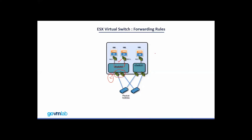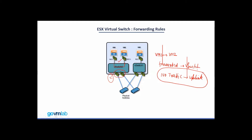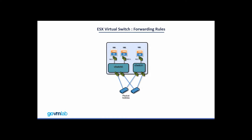To confirm: VM1 to VM2 traffic is forwarded by the virtual switch, and there is no traffic that goes over the uplink. This point is very important — the traffic will not go over the uplink. Now let's look at another scenario: what will happen when VM1 tries to ping VM3?